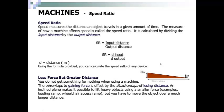You do not get something for nothing when using a machine. The advantage of gaining force is offset by the disadvantage of losing distance. An incline plane makes it possible to lift heavy objects using a smaller force, like loading ramps or wheelchair access ramps, but you have to move the object over a much longer distance.